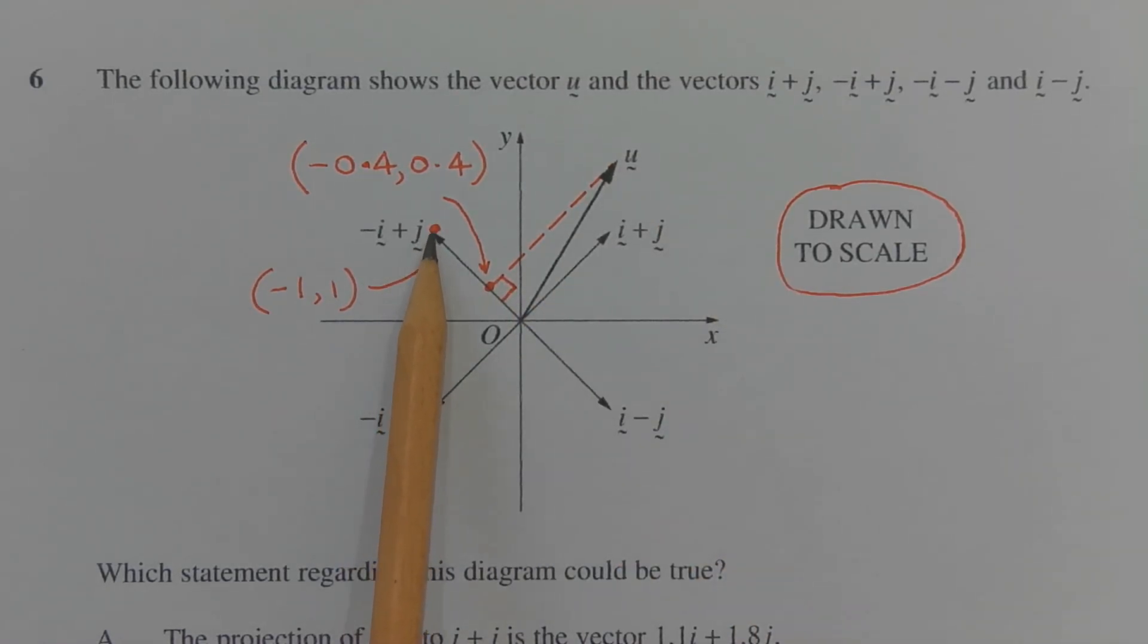And in comparison to this point here, the point negative 1 comma 1, assuming negative i is a unit vector and j is a unit vector, we can see that the point of projection of vector u onto negative i plus j is approximately at the coordinates negative 0.4 comma 0.4.